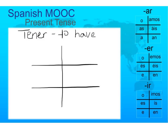The verb tener ends in -er. So it's going to use these endings: o, es, i, hemos, ace, and en.